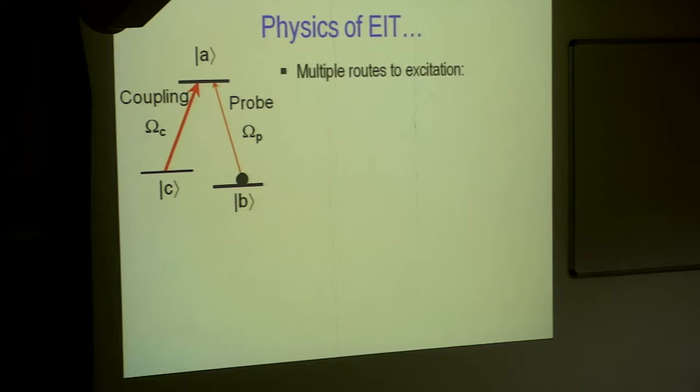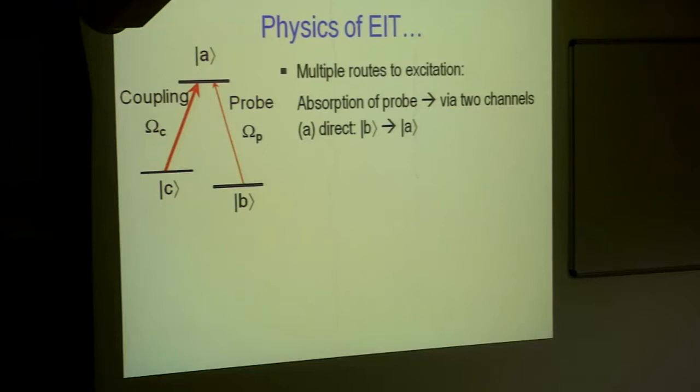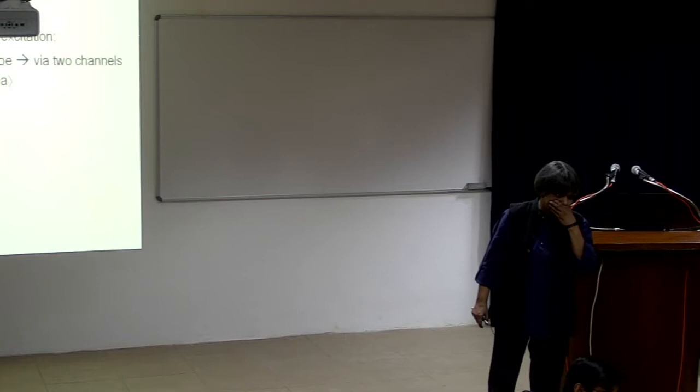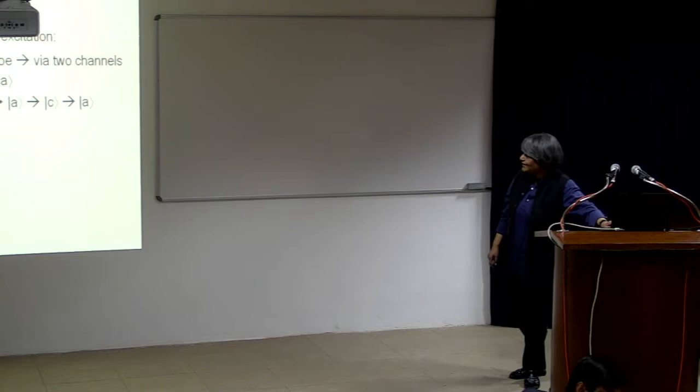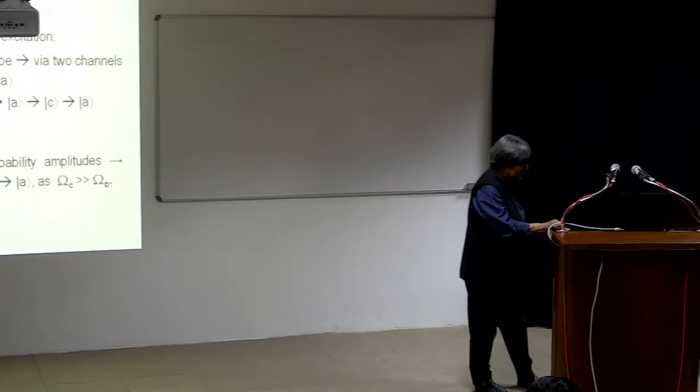There are many ways of understanding it. A very basic physics way of understanding is this, that like in interference, if you are familiar with double slit experiment, Young's double slit, I have a slit, I have just made two holes and I have a source of light, I am looking at the interference pattern on the other side.